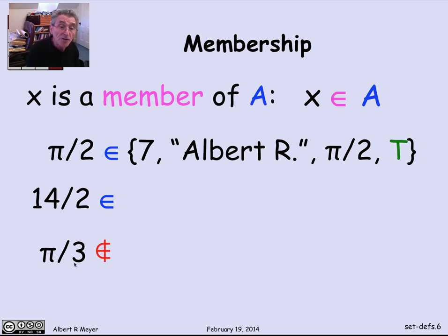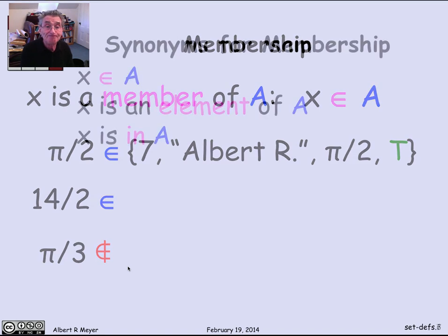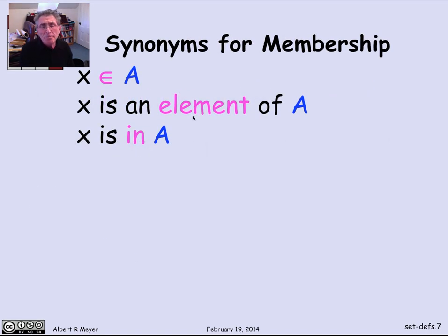On the other hand, pi over 3 is a number that's simply not in that set. So I'm using the epsilon with a vertical bar through it, or some kind of a line through it to mean not a member of. And membership is so basic that there's a lot of different ways to say it. You can say x is a member of A, x is an element of A, or x is in A. They're all synonyms.